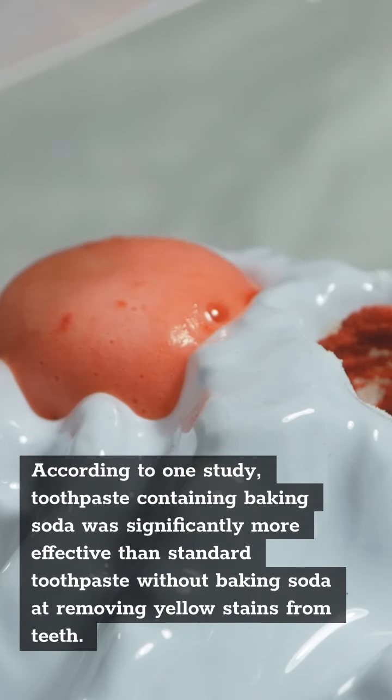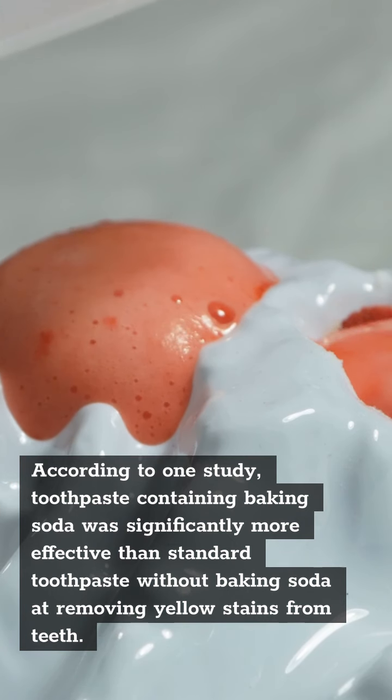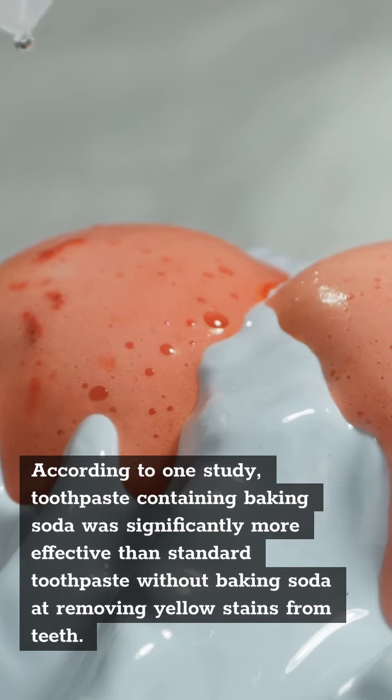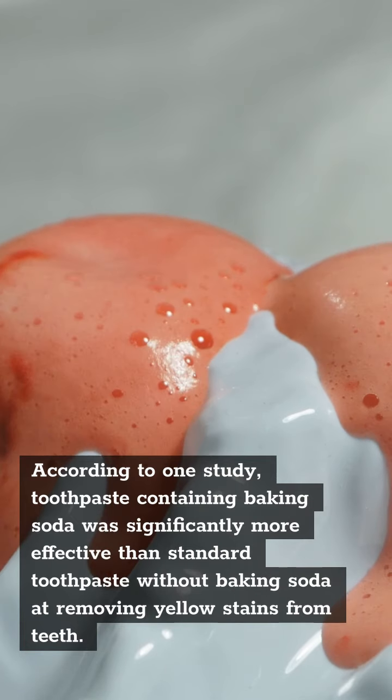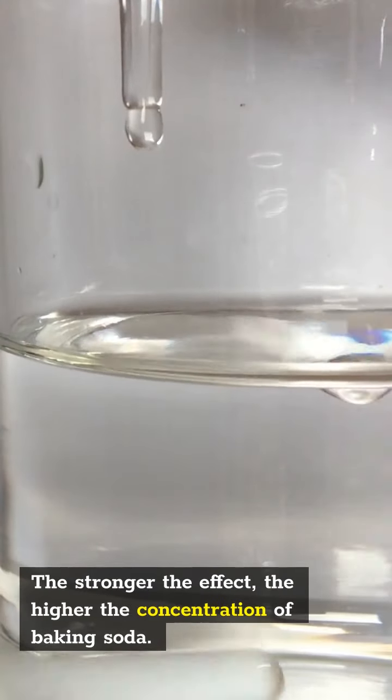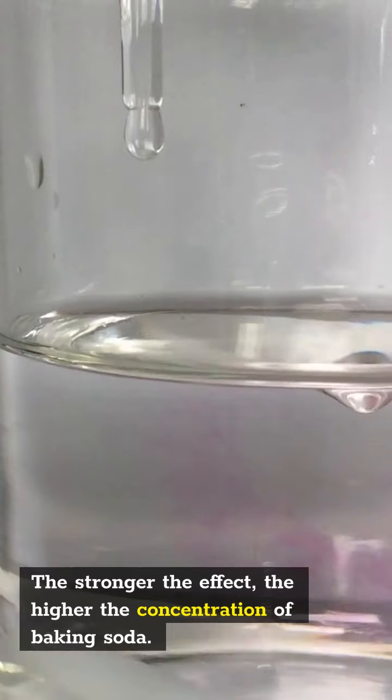According to one study, toothpaste containing baking soda was significantly more effective than standard toothpaste without baking soda at removing yellow stains from the teeth. The stronger the effect, the higher the concentration of baking soda.